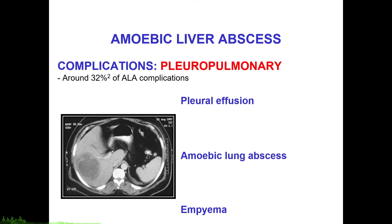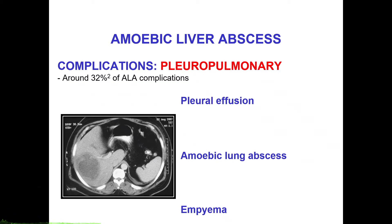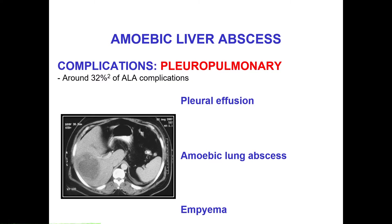Amoebic lung abscesses are usually secondary to direct spread through the diaphragm, through a hepatobronchial fistula, or primarily through hematogenous spread. It usually manifests as right basal pneumonia, which is unresponsive to traditional antibiotics.